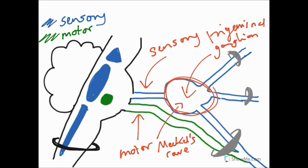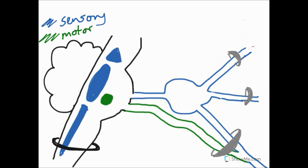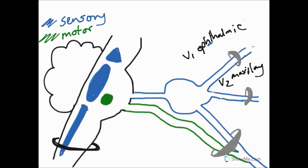Once we've got this ganglion, we then have some splitting — three divisions of sensory nerves: V1, V2, and V3. These three divisions have names. The first division, V1, is the ophthalmic branch — note the spelling, there's an H in ophthalmic. V2 is called the maxillary branch. And V3, which is distal to the foramen ovale, is going to be our mandibular branch.